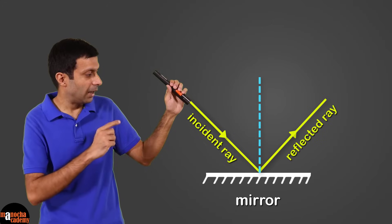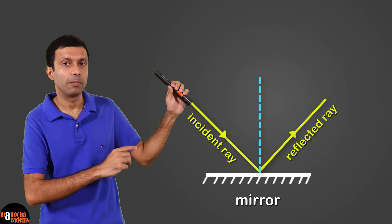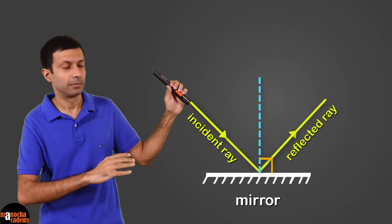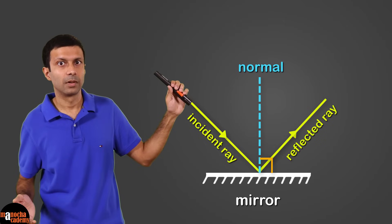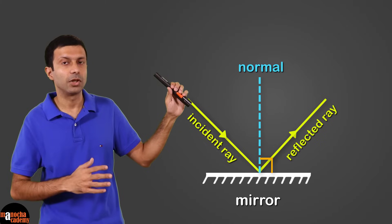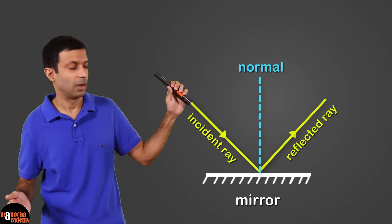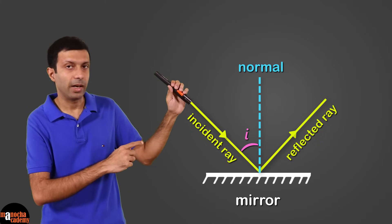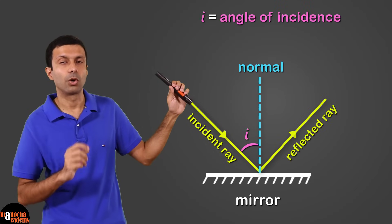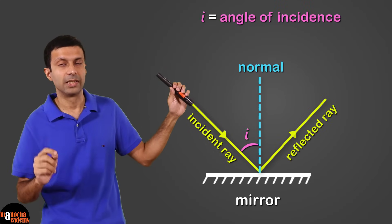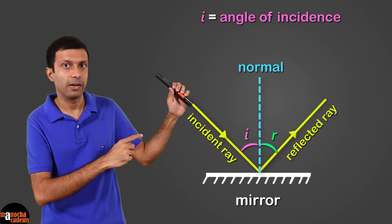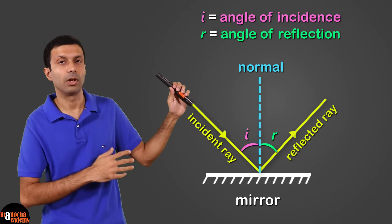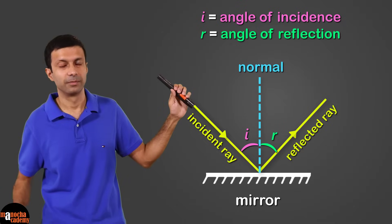Now we can draw an imaginary line at the point of incidence that is perpendicular to the mirror — this line is called the normal. The normal is used to measure the angles. The angle the incident ray makes with the normal is called the angle of incidence, and similarly the angle the reflected ray makes with the normal is called the angle of reflection.